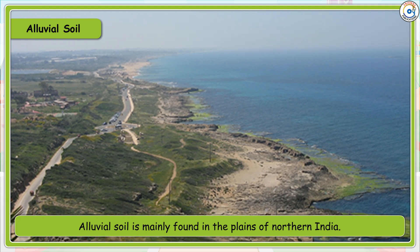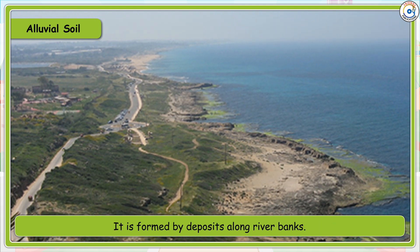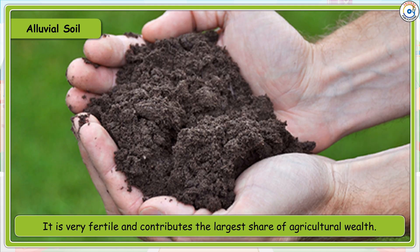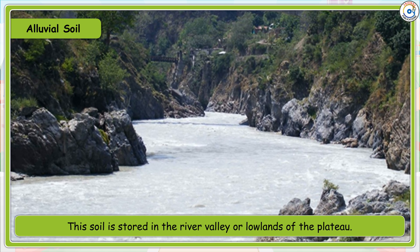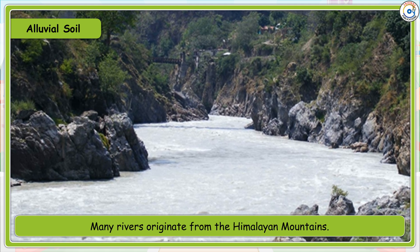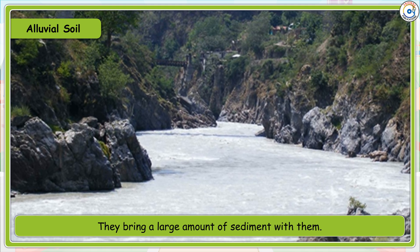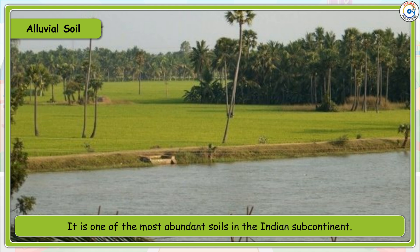Alluvial soil is mainly found in the plains of northern India. It is formed by deposits along river banks and is very fertile, contributing the largest share of agricultural wealth. The soil is stored in the river valleys or lowlands of the plateau. Many rivers originate from the Himalayan mountains and bring a large amount of sediment, which is deposited in the river valleys and flood plains.